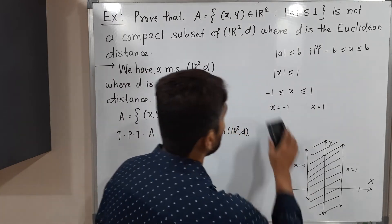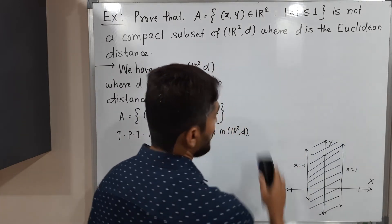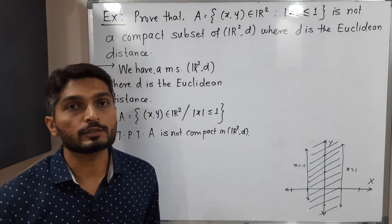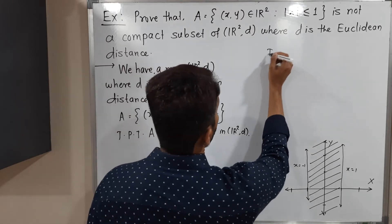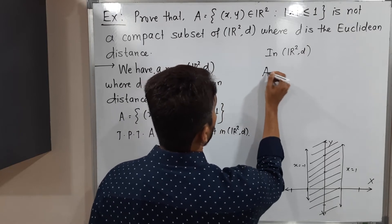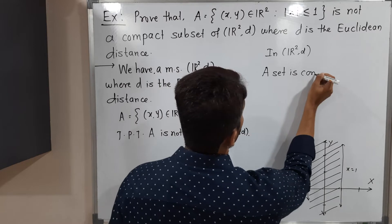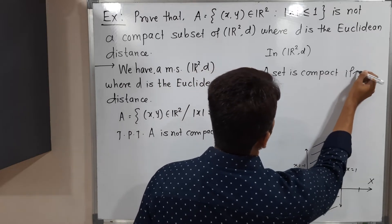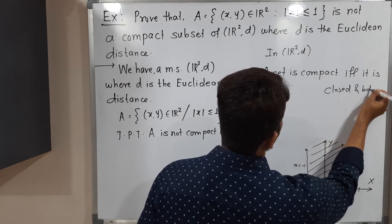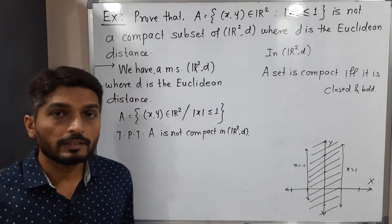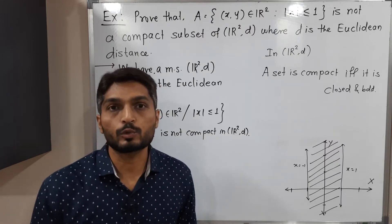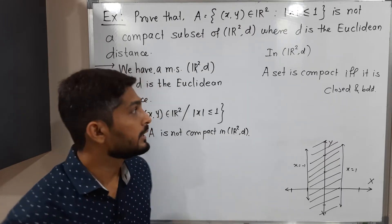There is one very important result we will use to prove the set is not compact. In ℝ²(d) where d is the Euclidean distance, a set is compact if and only if it is closed and bounded. So in ℝ²(d), any closed and bounded set is compact, and any compact set is closed and bounded.